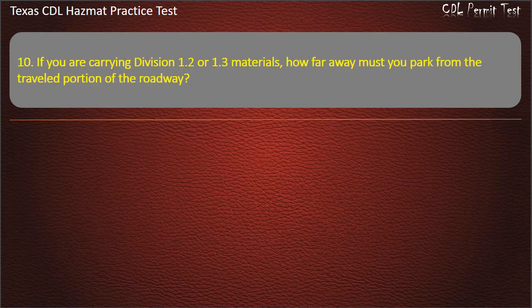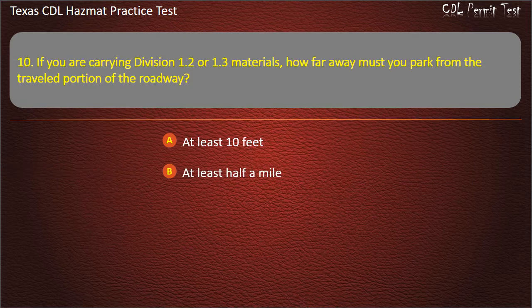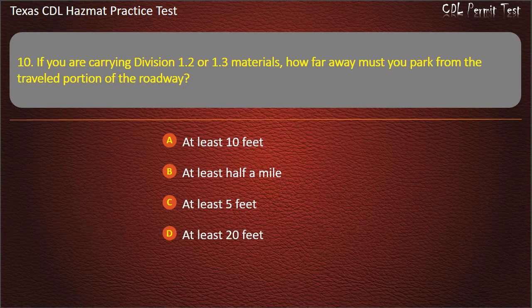Question 10: If you are carrying Division 1.2 or 1.3 materials, how far away must you park from the traveled portion of the roadway? At least 10 feet. At least half a mile. At least 5 feet. At least 20 feet. Answer: At least 5 feet.